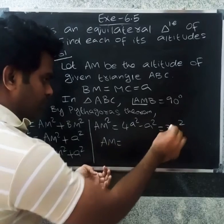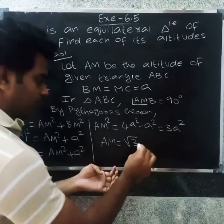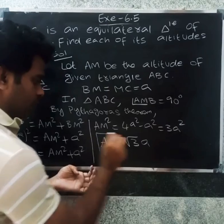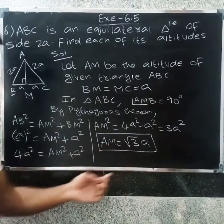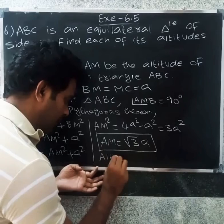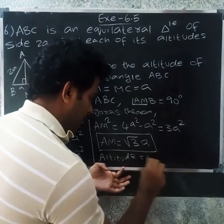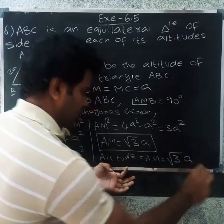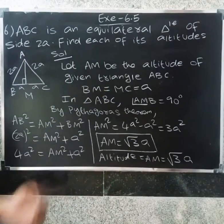So AM equals A times square root of 3. Therefore the altitude of the given triangle AM equals A root 3.